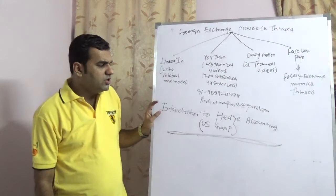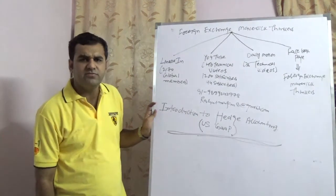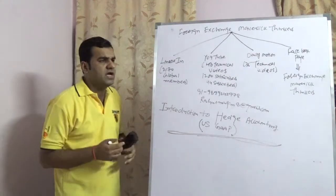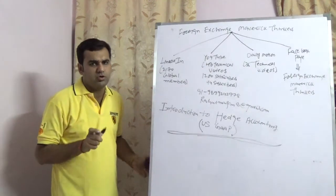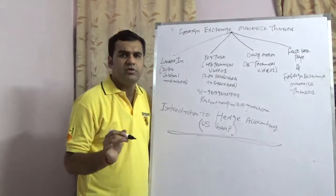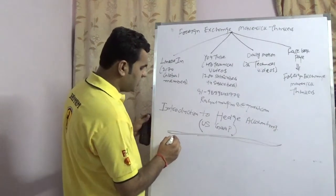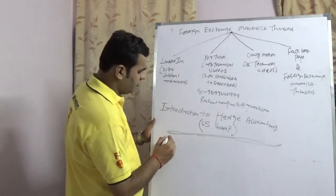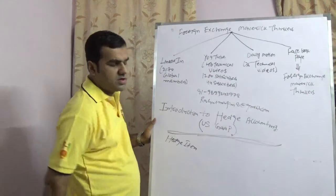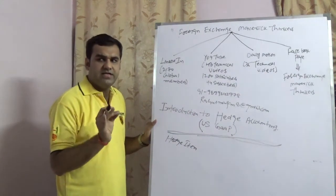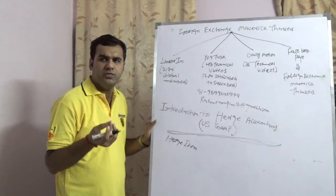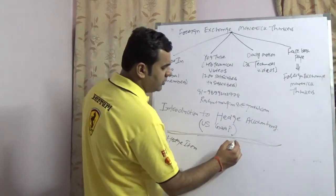Hedge accounting plays a very critical role because in the last few years hedge accounting — which is nothing but the accounting of hedging — has grown in importance. In this video I am going to take a very simplistic view of hedge accounting. The further videos would explain in detail what exactly hedge accounting involves, but this covers it simply. Hedge accounting covers two important pillars: one is known as the hedged item — on which you are taking a hedge — which includes receivables, payables, PCFC loans, ECB, or anything similar.